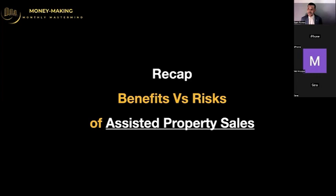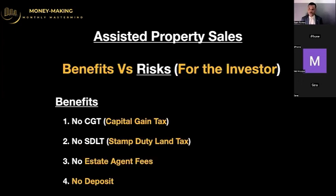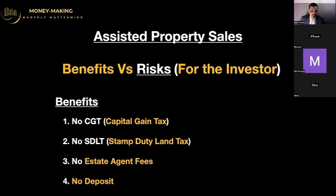In terms of benefits, we have a couple of benefits and also some risks when it comes to dealing with vendors. There are risks and benefits for both parties — for the investors and also for the vendor. For investors, the benefits include no CGT, which stands for capital gains tax. Every time you sell a property you have to pay tax, but with this strategy — assisted property sales — you don't pay any tax because you're not going to sell the property. You are just assisting the landlord to sell it. Also no SDLT tax, meaning no stamp duty tax.